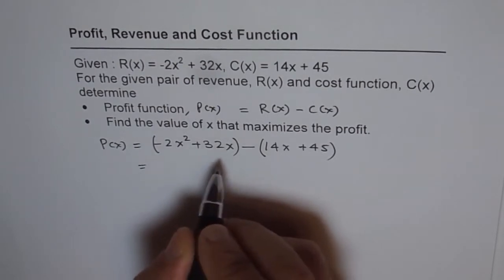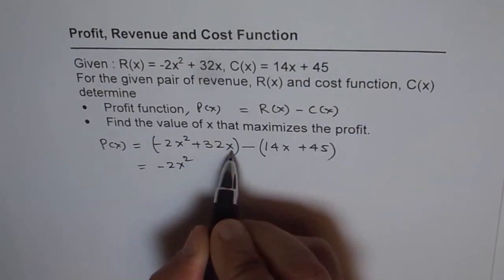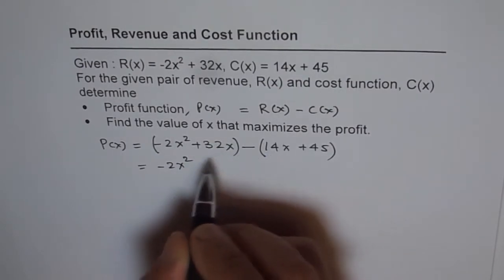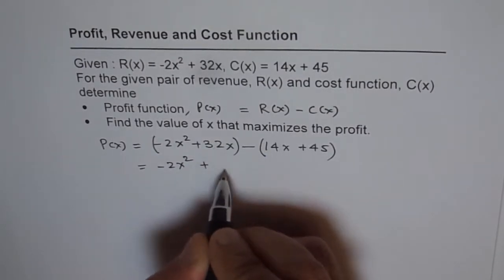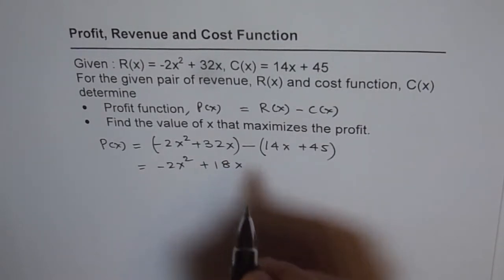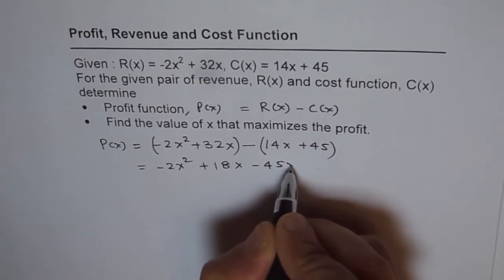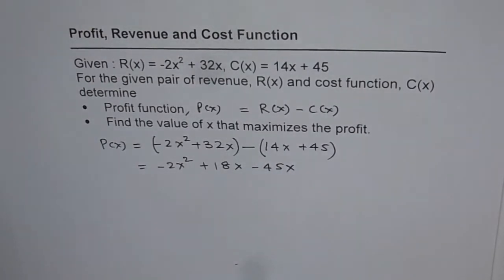So, now, let us open the brackets and simplify. So we get -2x² and we have 32x minus 14x, which will give us +18x, and minus 45. So, that is the profit function.